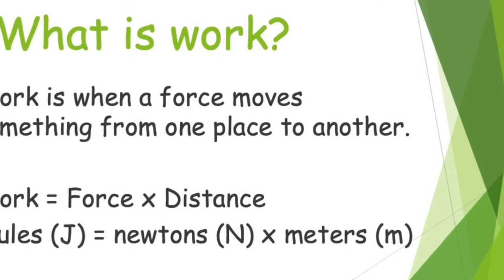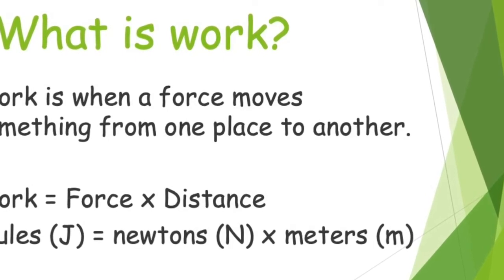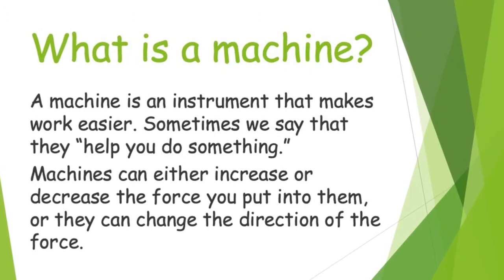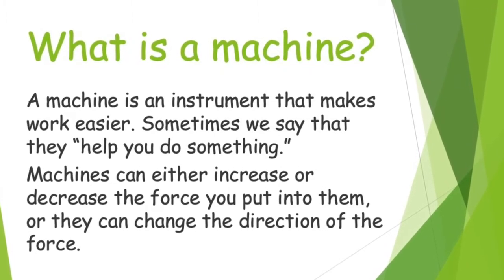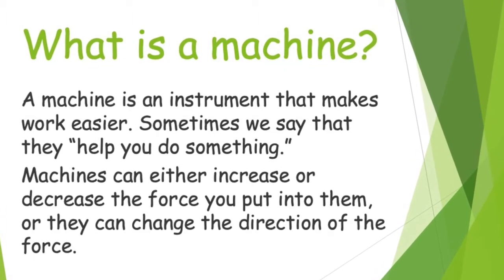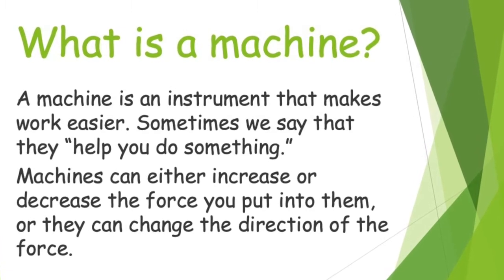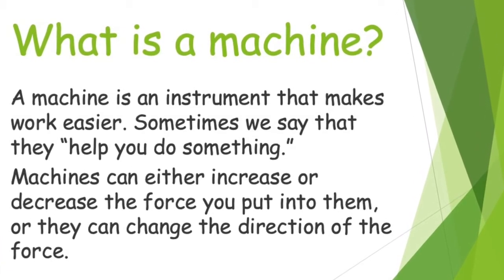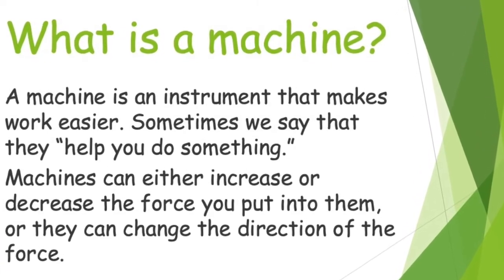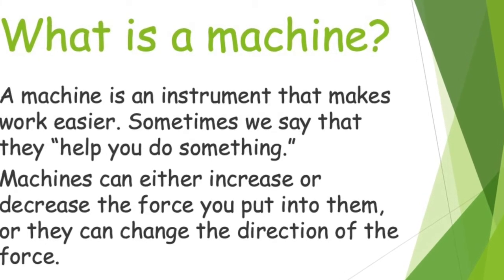So now that we know what work is, what is a machine exactly? A machine is an instrument that makes work easier. Sometimes we say that they help us do something. Machines can either increase or decrease the force we put into them, or they can just change the direction of that force, whatever makes it easier for us.